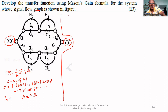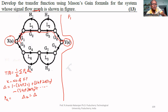First, let us find forward path 1. In this forward path, we travel through g1, g2, g5, g6 from source to destination. The direction must be correct — you cannot travel against the signal direction. Therefore, p1 = g1·g2·g5·g6.